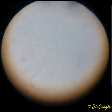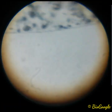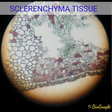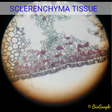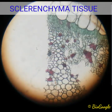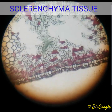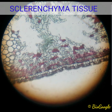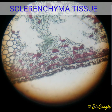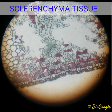Moving on to the next slide: sclerenchyma. Here you can clearly see more amount of thickenings throughout the cells, throughout the plant tissue. It is a leaf material — you can see the deposition of lignin in a greater amount. Hence it is a mechanical tissue, but remember it is a dead mechanical tissue. The cells are dead, they do not have protoplasm, the walls are thick, and the walls have pits.